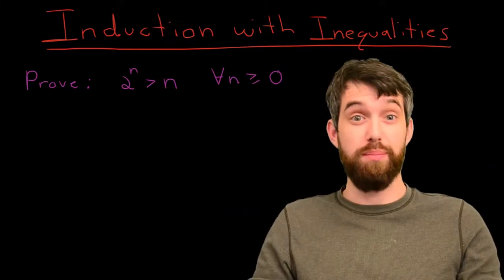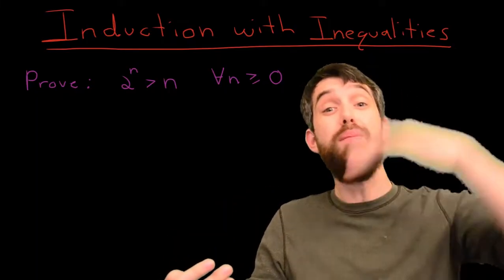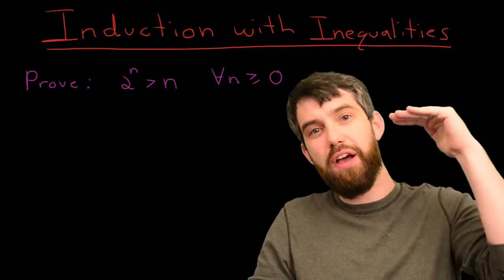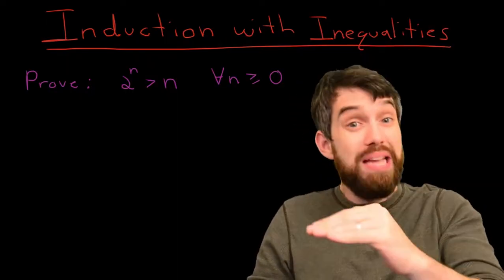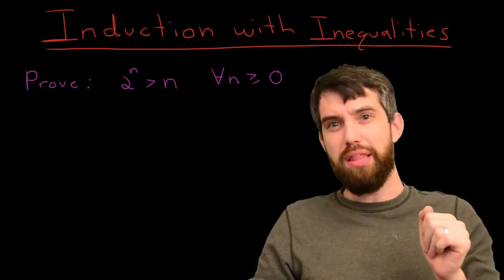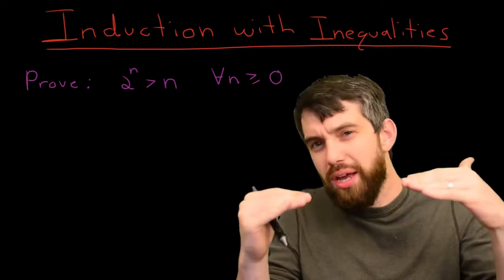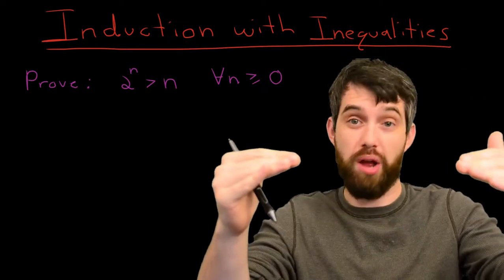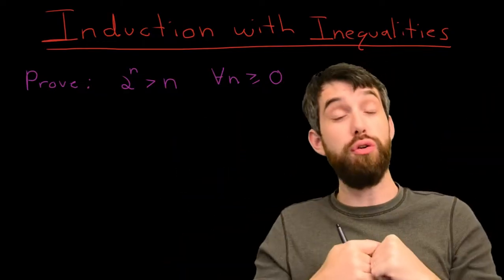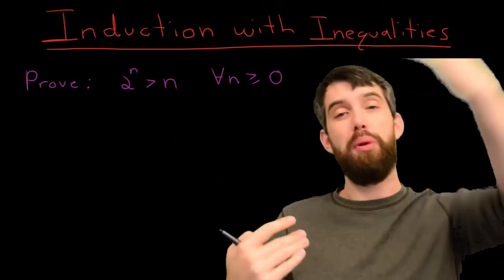Now, induction has a couple different steps. The analogy I always use is climbing a ladder. We have to be able to get onto the first rung of a ladder, a basis step, and then we have to know that if we're on the kth rung of the ladder, that we can climb to the k plus 1th rung of the ladder. And if both of those two things are true, then we're able to climb our ladder.